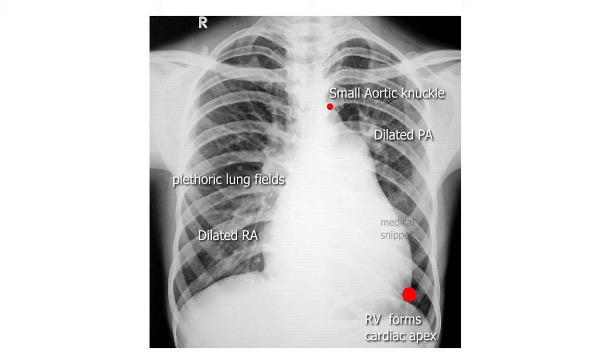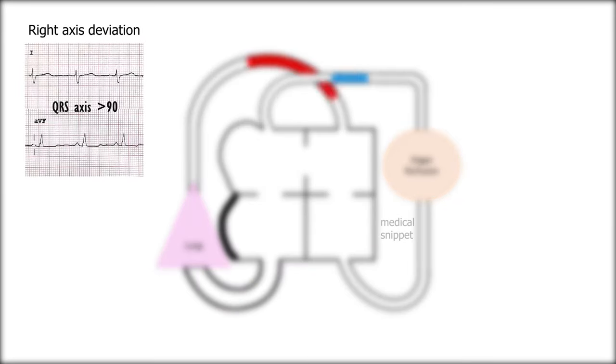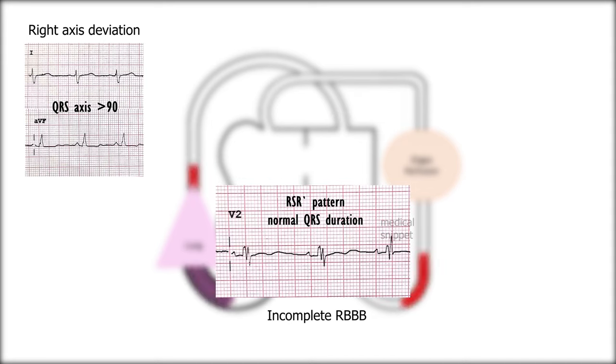The aortic knuckle is small due to chronic decrease in systemic cardiac output. The ECG findings are right axis deviation, incomplete right bundle branch block due to hypertrophy of crista supraventricularis. In ostium primum atrial septal defect, there is left axis deviation due to absence of left anterior fascicle.